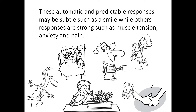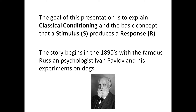These automatic and predictable responses may be subtle, such as a smile, when other responses are strong, such as muscle tension, anxiety, and pain. The goal of this presentation is to explain classical conditioning, and the basic concept that a stimulus, S, produces a response, R. The story begins in the 1890s with the famous Russian psychologist Ivan Pavlov, and his experiments on dogs.